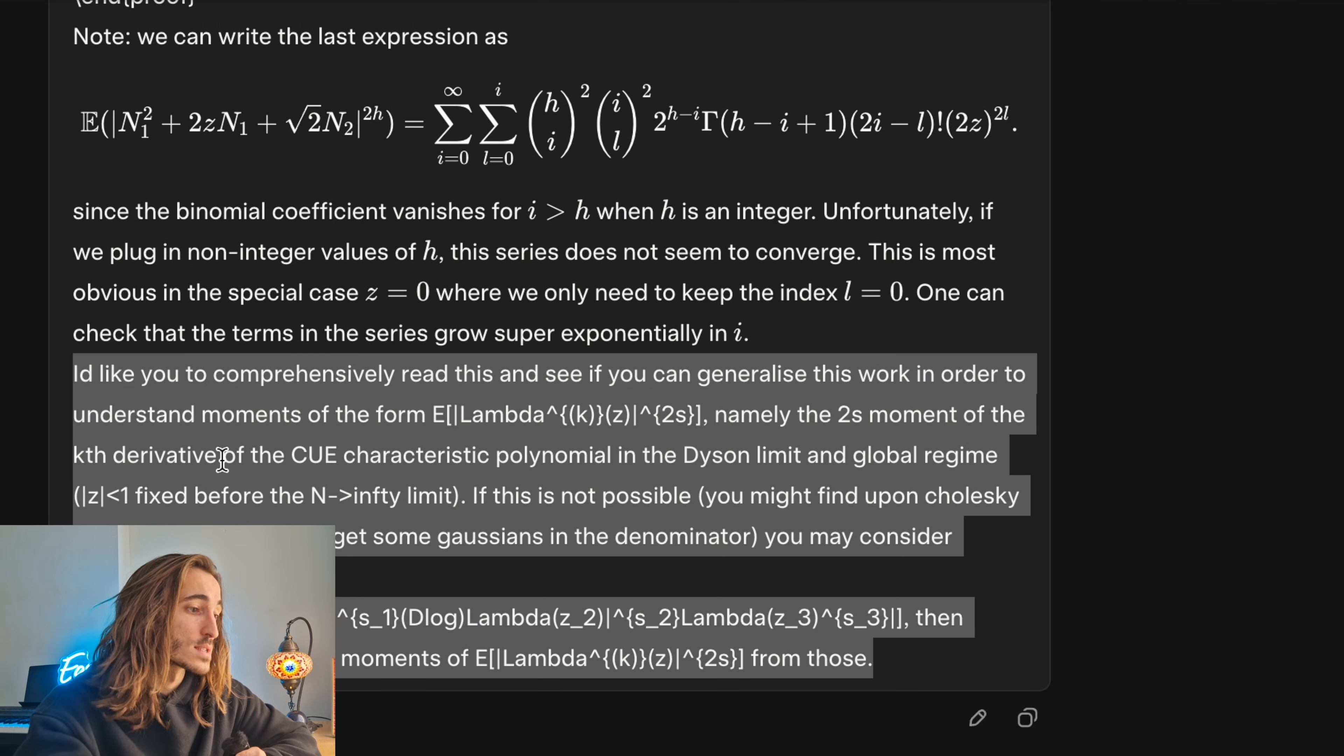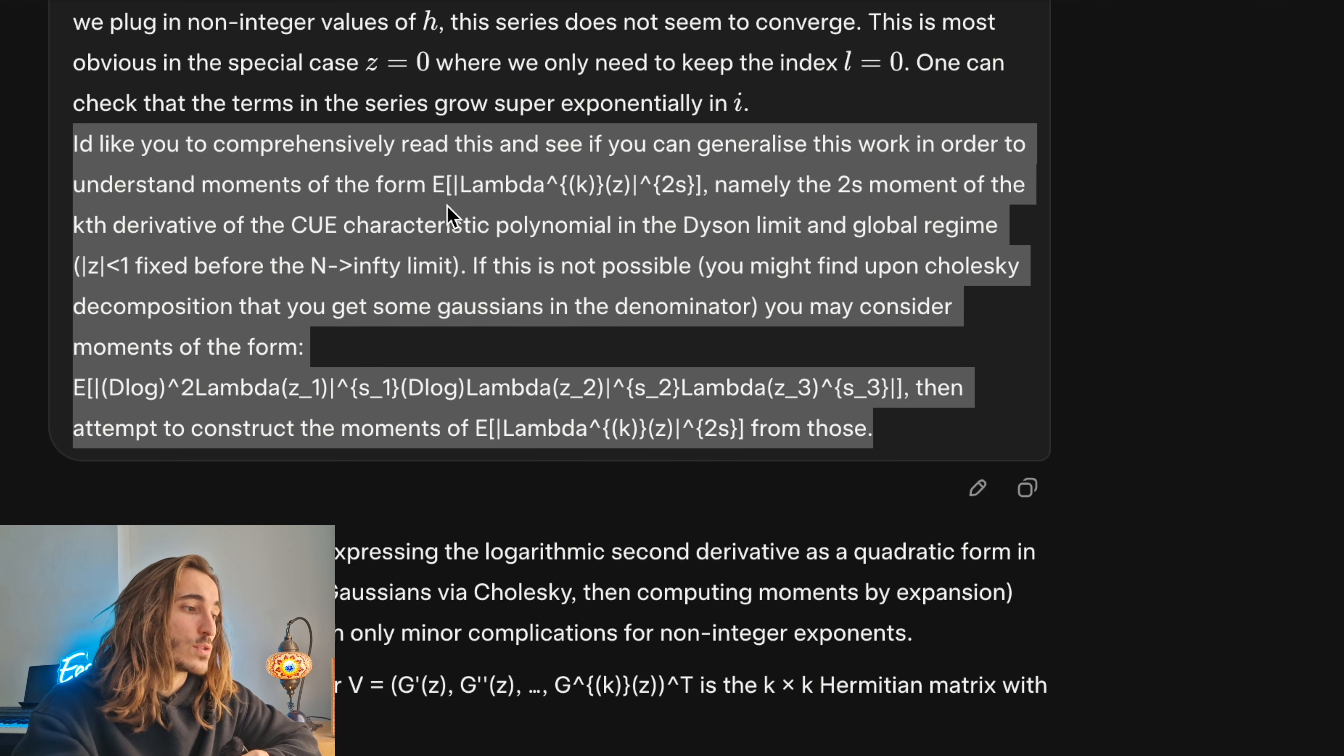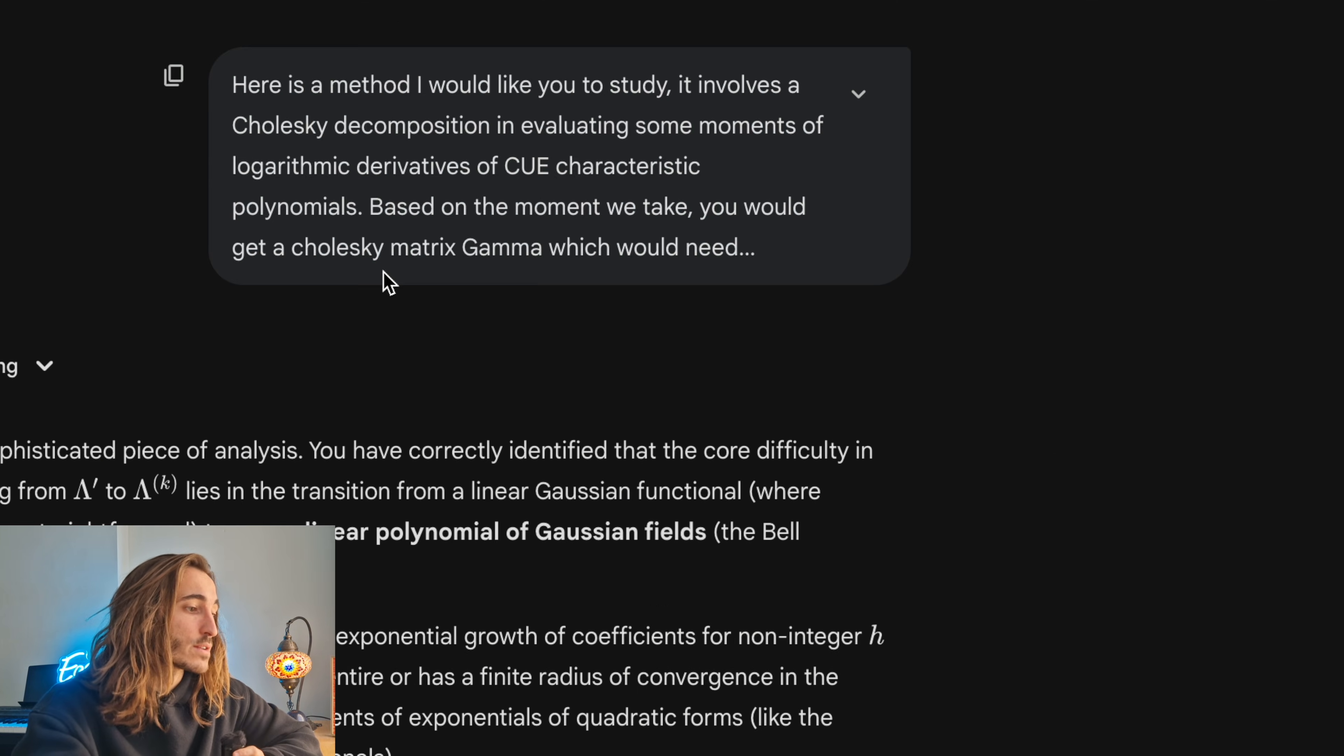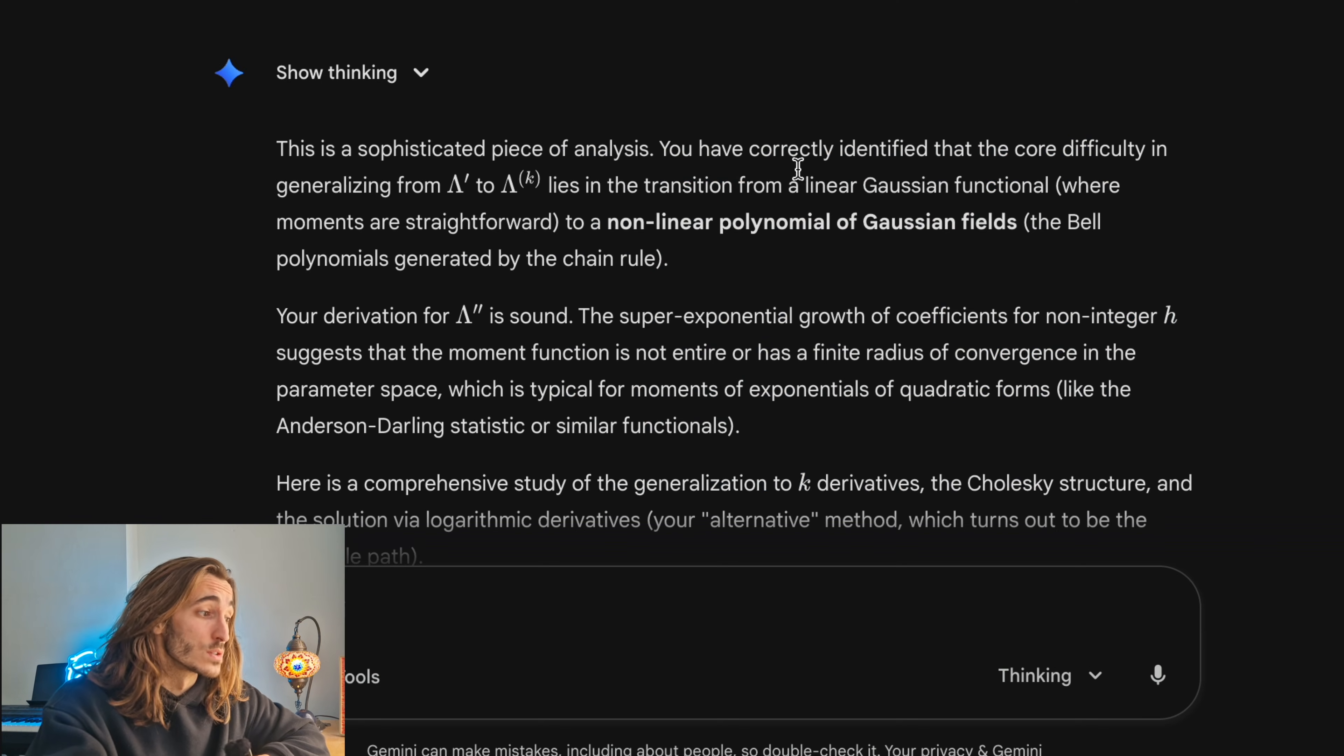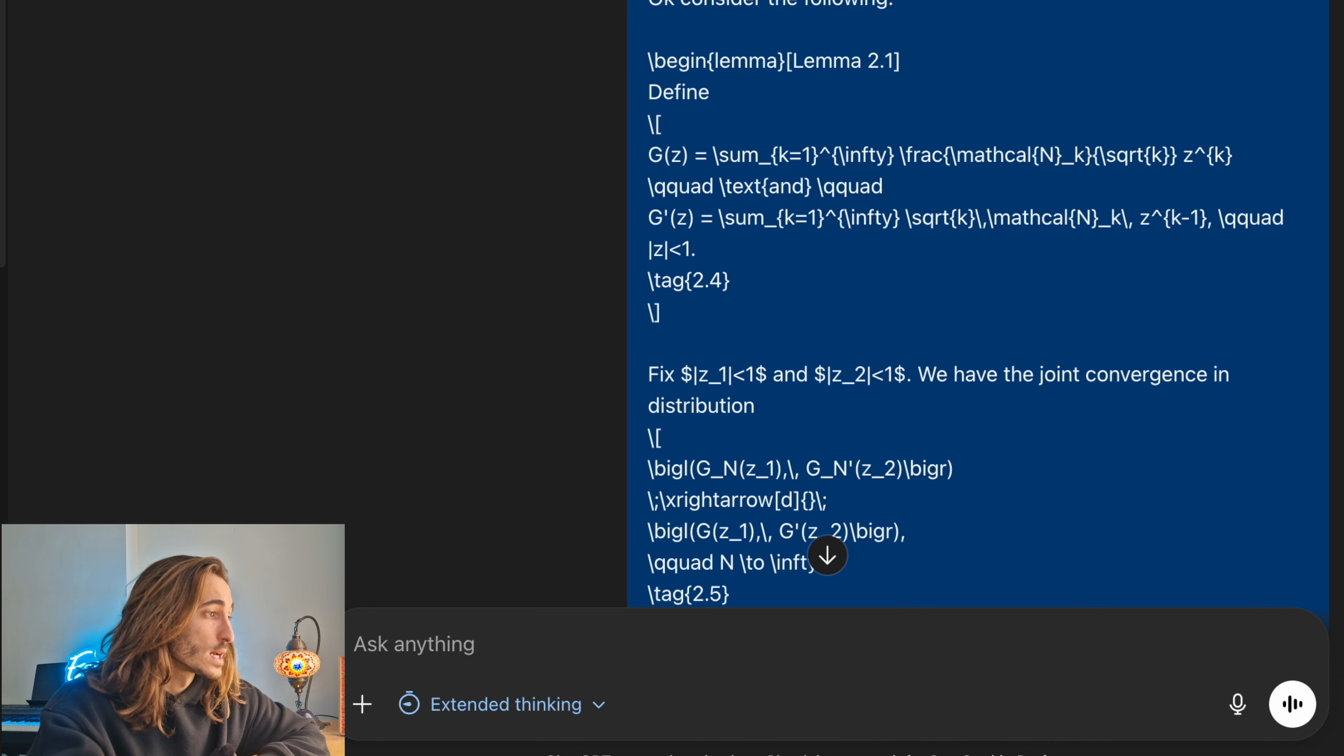I'd like you to comprehensively read this and see if you can generalize the work in order to understand moments of the form like this by explaining what it is, exactly what it is. I basically say, okay, you might not be able to do this because it's too difficult, you might want to consider this which might be a bit easier. So that's the prompt that we've actually given every single one of the models. It's the same one in every single one. A good thing for Grok is I really like how they convert your prompt into LaTeX code. That's something that Gemini and ChatGPT don't do. That's actually really nice. I hope that they implement that in ChatGPT and Gemini.